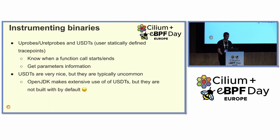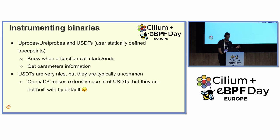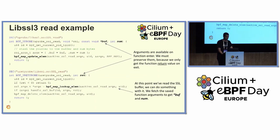The tools we have for instrumenting binaries: we can instrument kernel code with K-probes, but to instrument user-space binaries we use U-probes and U-ret probes, which are mechanisms provided by the Linux kernel, or user statically defined trace points. With U-probes and U-ret probes, we know when a function starts and when a function ends, and we can get parameter information. From Beyla currently we only use U-probes and U-ret probes, as user statically defined trace points are typically uncommon — OpenJDK uses them but they're not built by default. This is an example of the U-probe code we attach to a library in order to detect when a function starts and ends.